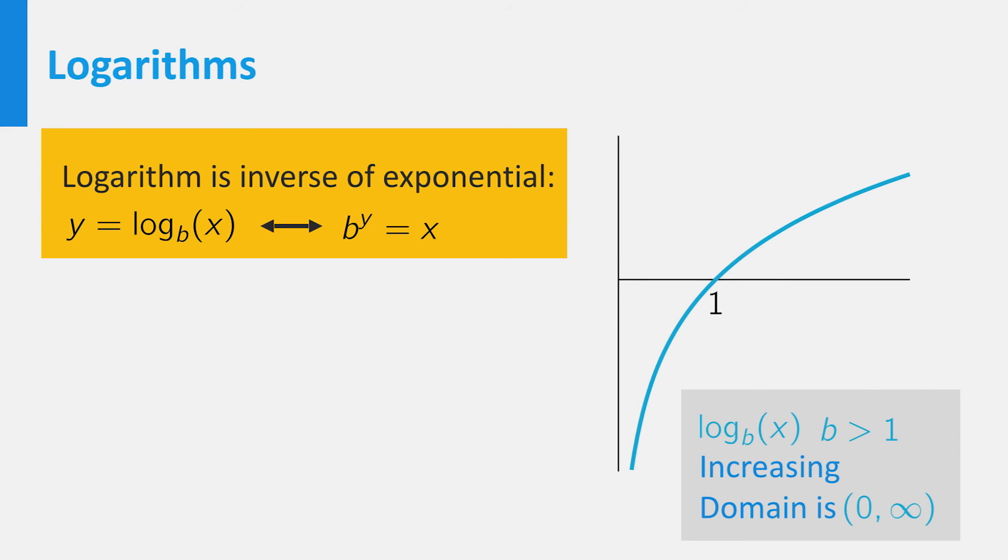For any base, the logarithm has a vertical asymptote at x equals 0. For base b larger than 1, the graph is ever increasing.